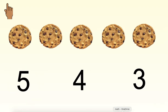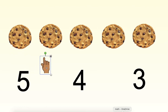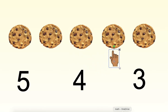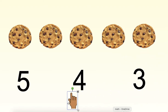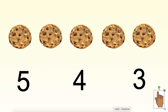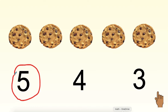Now it is your turn to count. I'm going to help you. I'm going to move my mouse from each cookie. As I do, you can count. How many cookies are there? Look at each choice. Now point to the number. How many are there? Did you point to this one? There are five cookies on this page.